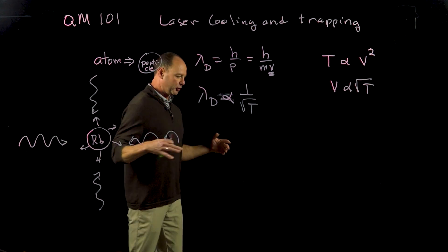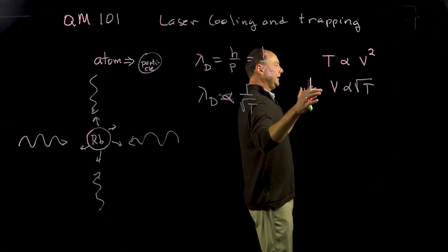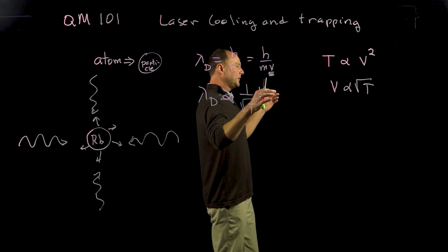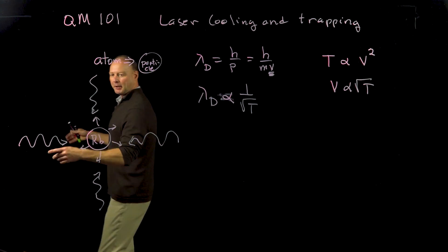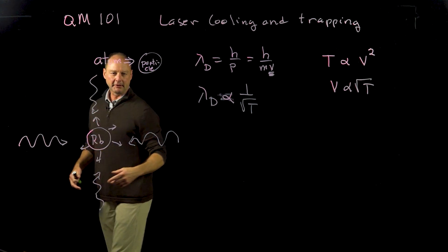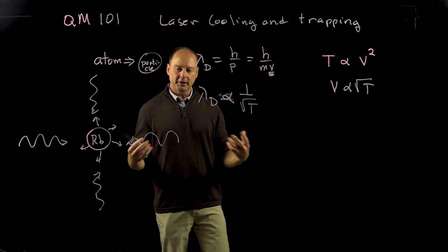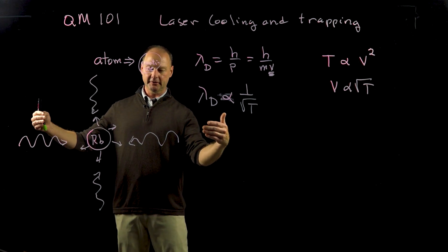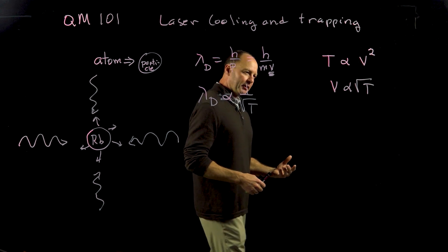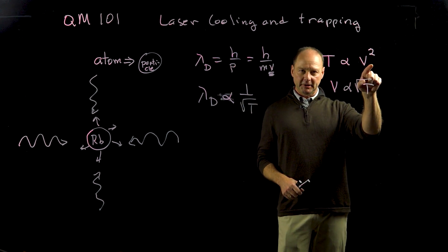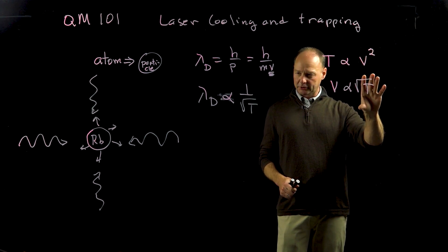If I'm a rubidium atom jiggling around and I'm going this way, that's my temperature. At room temperature I'm jiggling all around. If I'm jiggling this way and I run into a photon, I get hit by the photon and slow down in that direction. With six laser beams in all six directions, the atoms absorb the photons and stop jiggling. Stopping the jiggling means their velocity becomes smaller, and a smaller velocity means their temperature goes down.